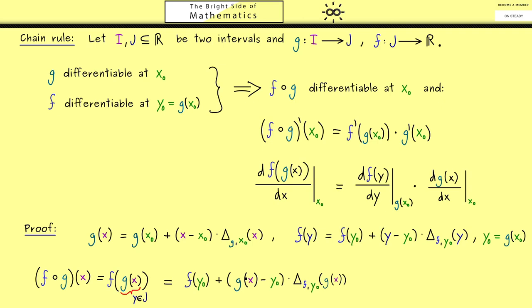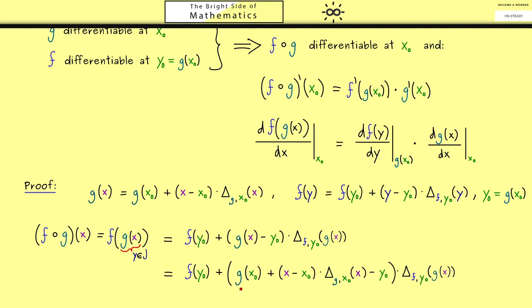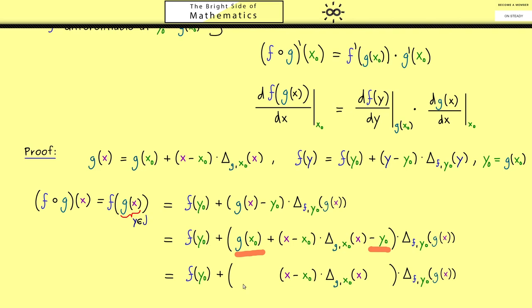So you see since g comes in here we can substitute it with the formula we have for g. Hence we also get in the term (x-x₀) we need for the composition. So now we have added these terms here and you can immediately see g and y cancel out. Therefore we see what remains is exactly what we want. Here we have the factor (x-x₀) and here are the two derivatives.